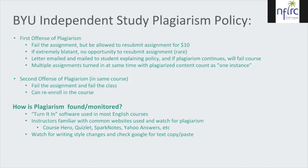When there's a second offense of plagiarism in the same course, the student fails that assignment and fails the class. They can re-enroll, but they pay tuition every time, which can become quite costly. In rare occasions, we have students who petition for an exception. To my knowledge, every petition for a plagiarism violation has been denied because the plagiarism was very clearly overt — it wasn't a case of not knowing what they were doing.